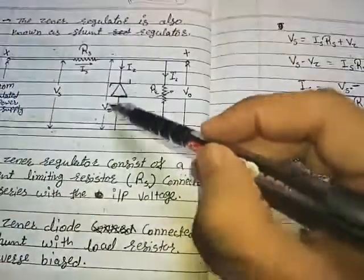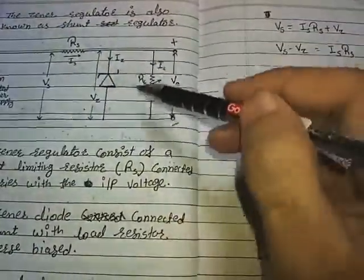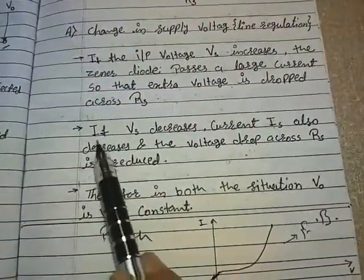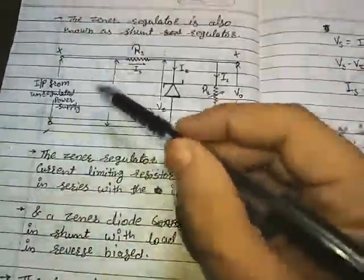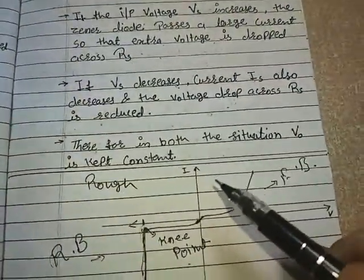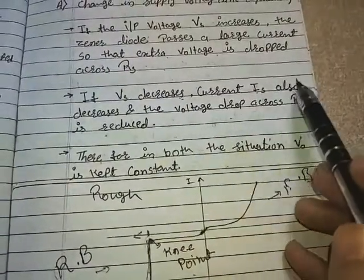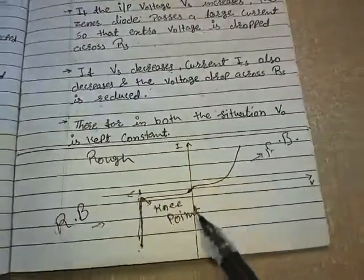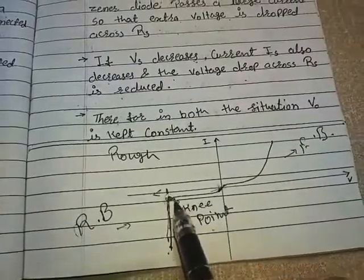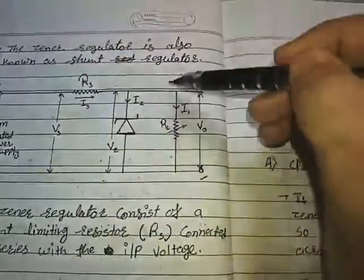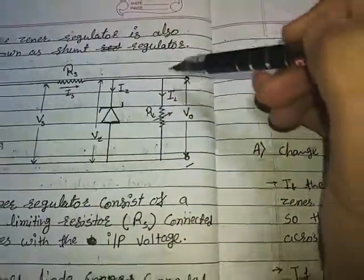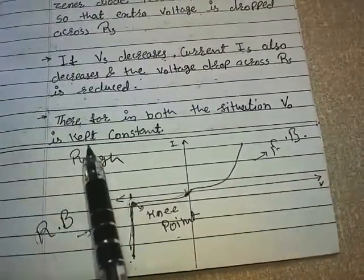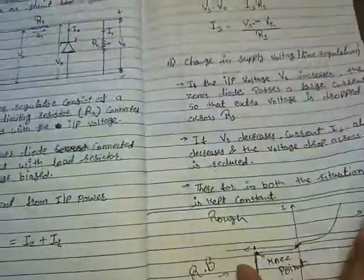The maximum current passes through the zener diode and at the load resistor we get a constant output. If VS decreases, IS also decreases and the voltage drop across RS is reduced. A constant current will flow through the zener diode, so the remaining current flows through IL. In both cases the output voltage V0 remains constant.